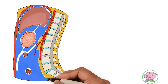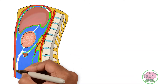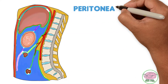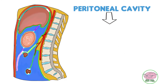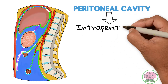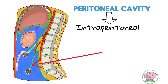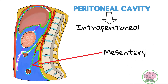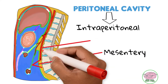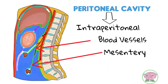In this sagittal drawing of the abdomen, the blue cavity is the peritoneal cavity. Every organ inside it is known as intraperitoneal, and they are suspended by the green membrane known as the mesentery. The mesentery is the structure that contains the blood vessels within itself.